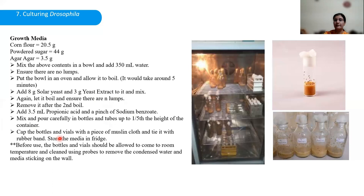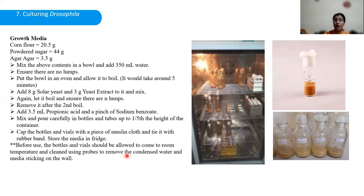After proper cooking of the media, we let it cool and then add antifungal agents like propionic acid and sodium benzoate. The media is then transferred up to one-fifth of the height of the container — which could be milk bottles or culture vials. We allow the media to cool properly, then cap the vials and bottles and place them in the fridge at 4 degrees Celsius. Care must be taken that the walls do not have sticky media, there is no water condensation on the walls, and the media should be neither too hard nor too soft.